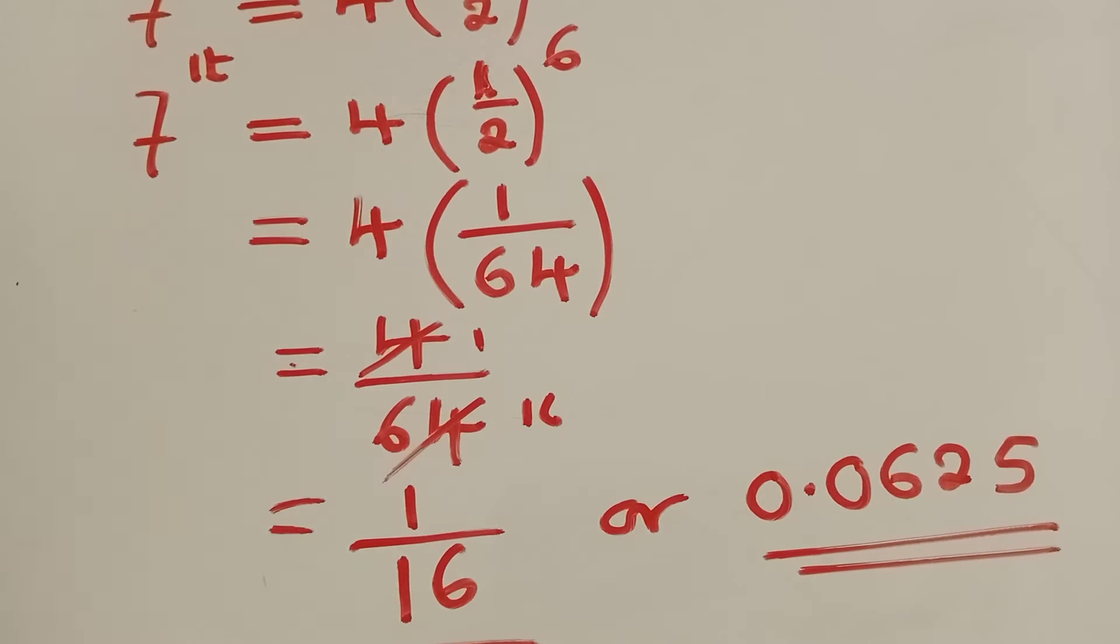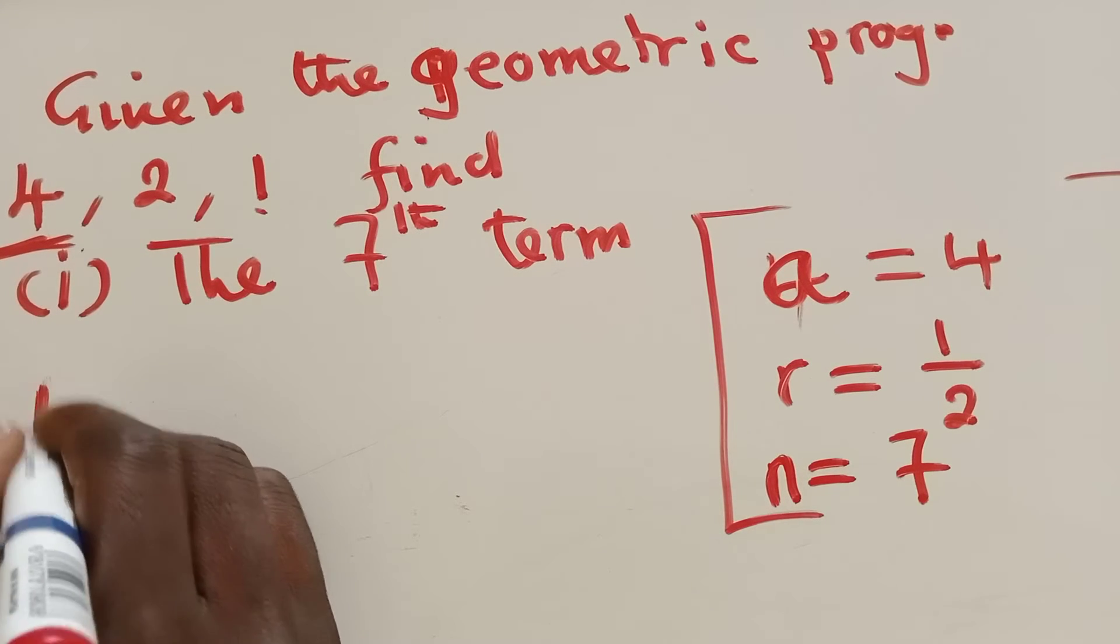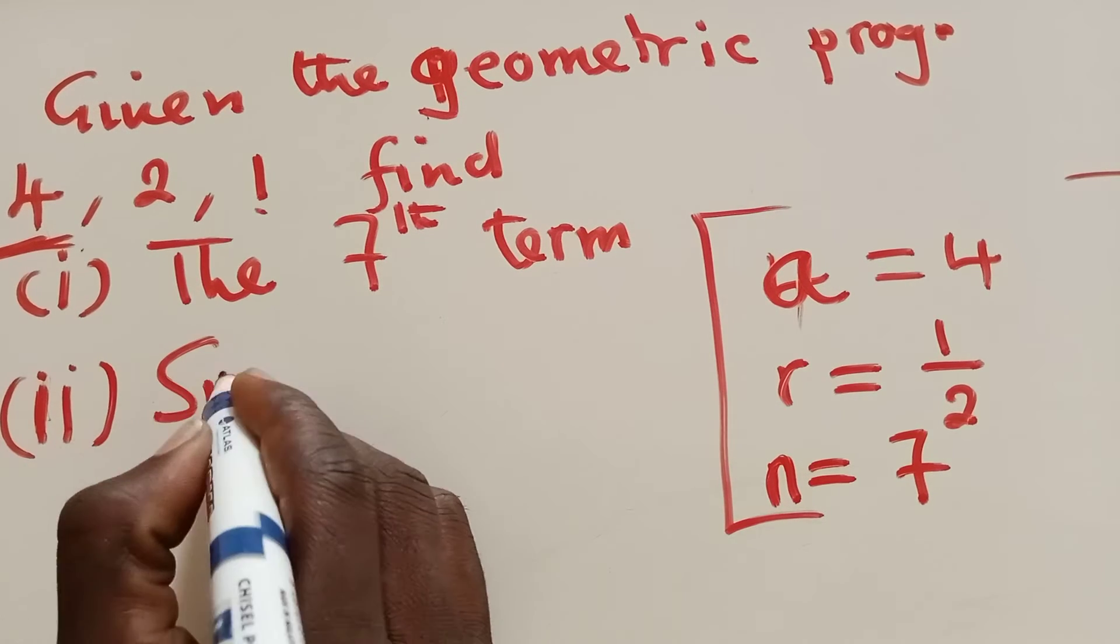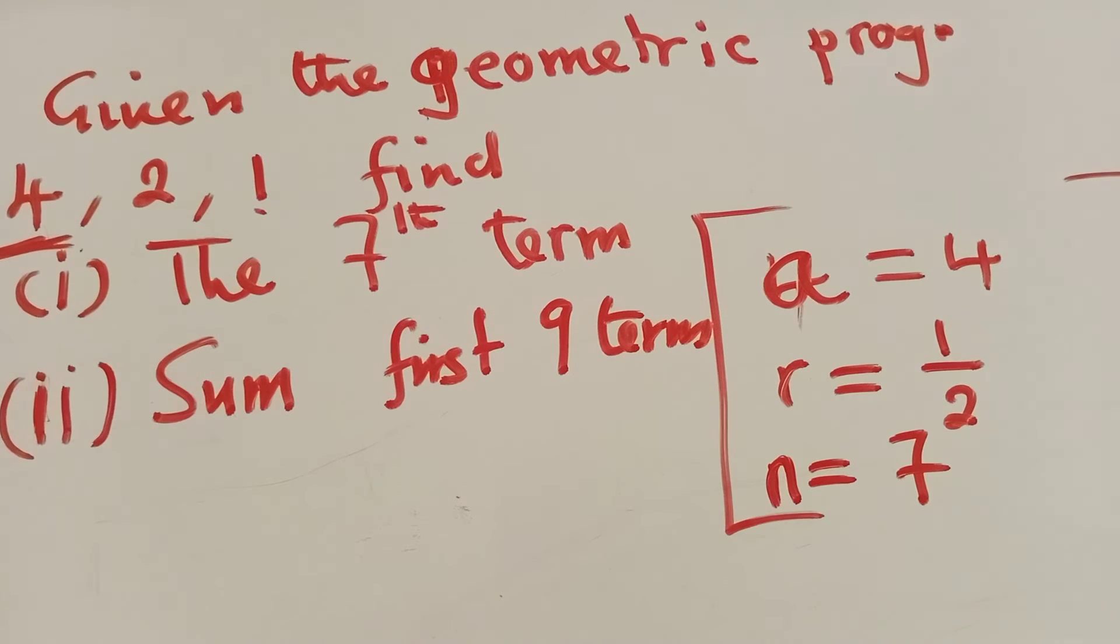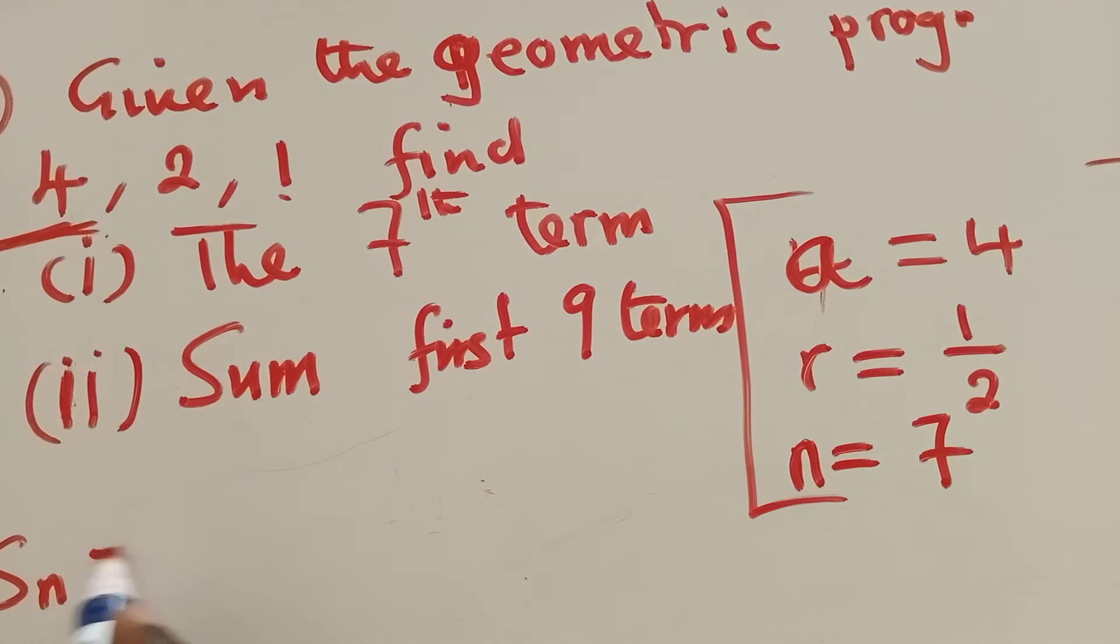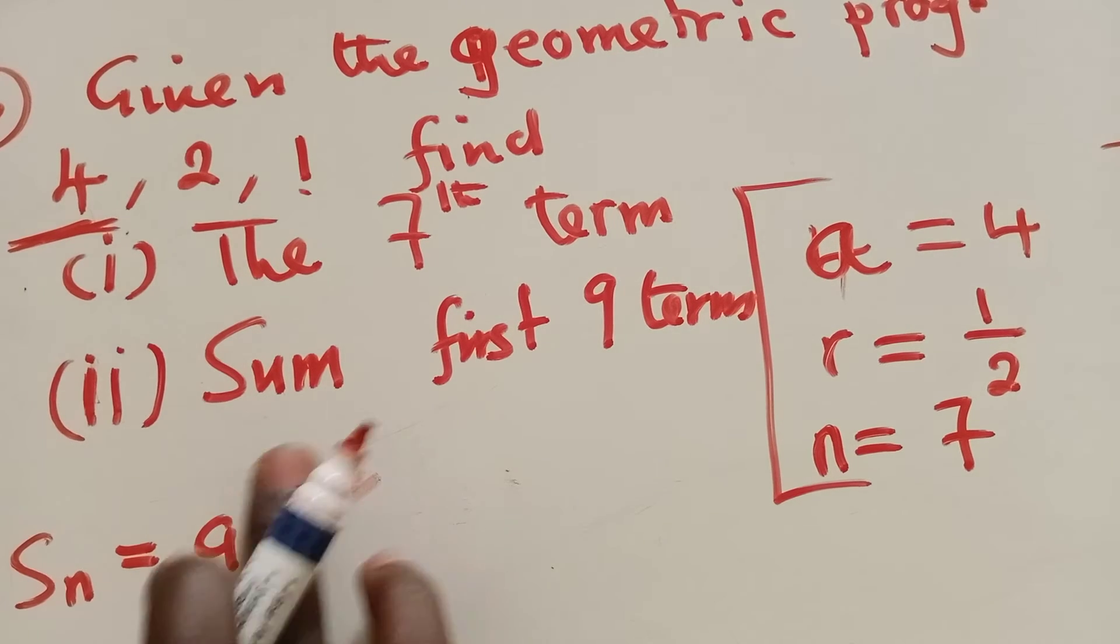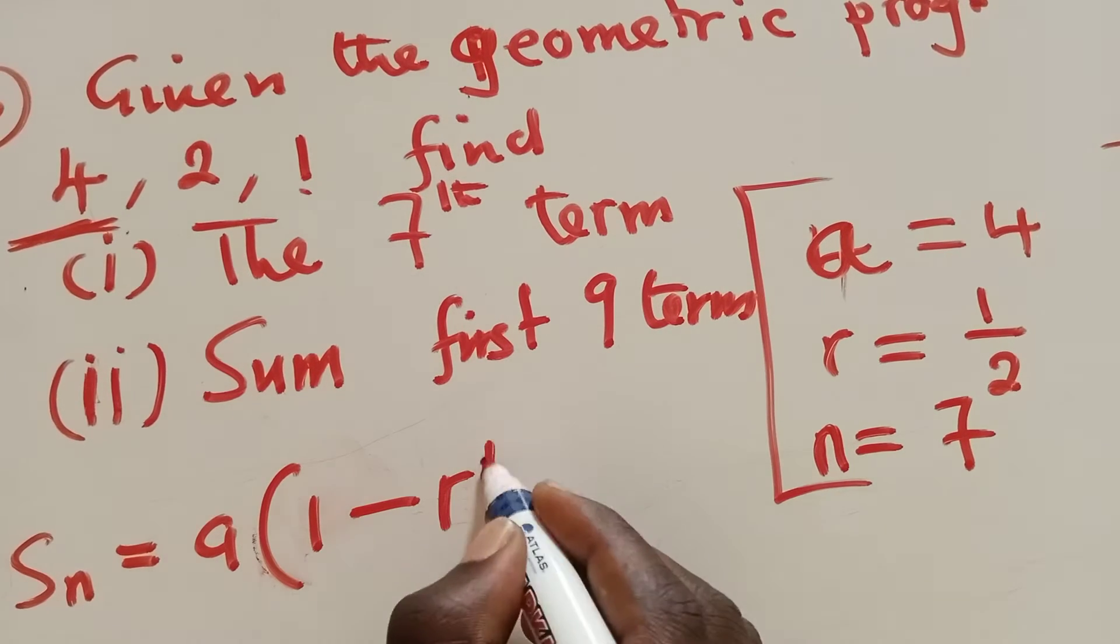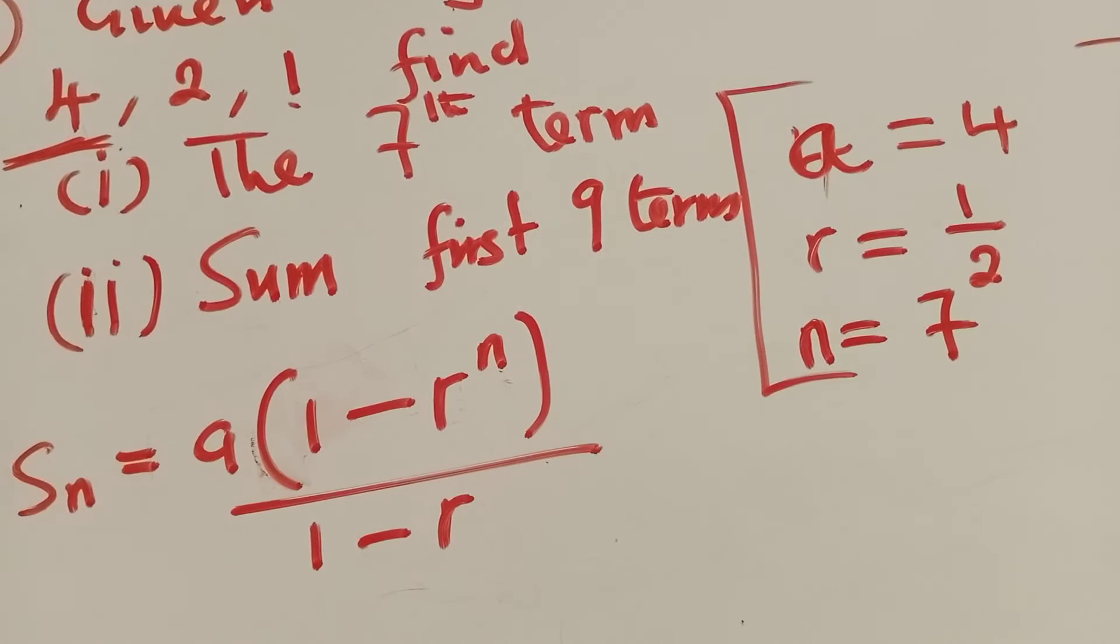We're still on question B. Roman numeral 2, they want us to find the sum of first nine terms. So the formula of finding sum, it says sum is equal to A open bracket, 1 minus R to the power N, over 1 minus R. This is the formula.